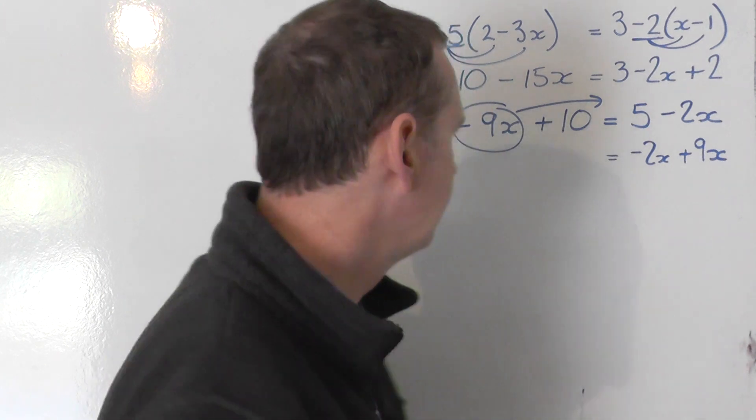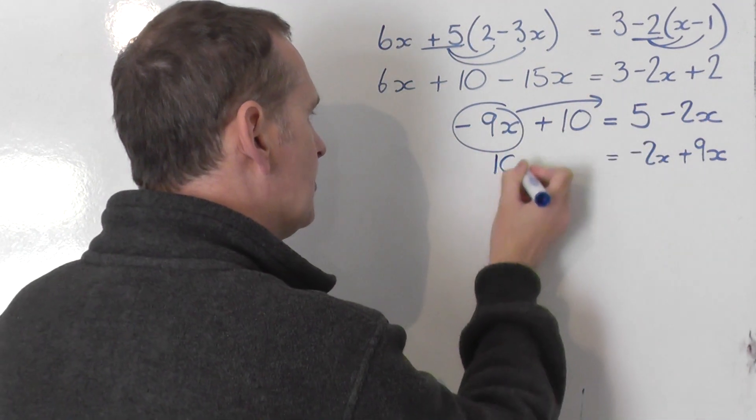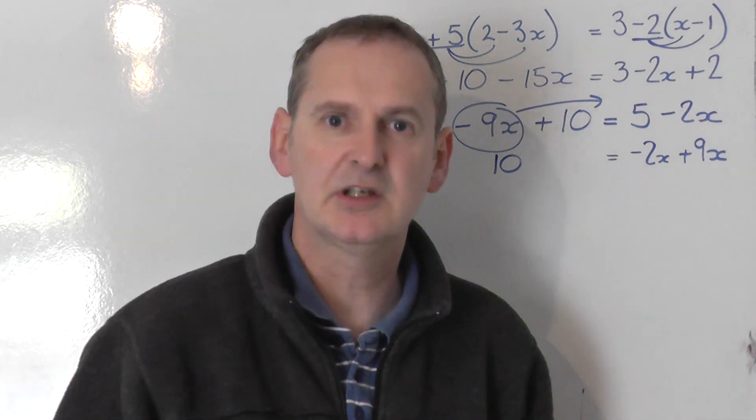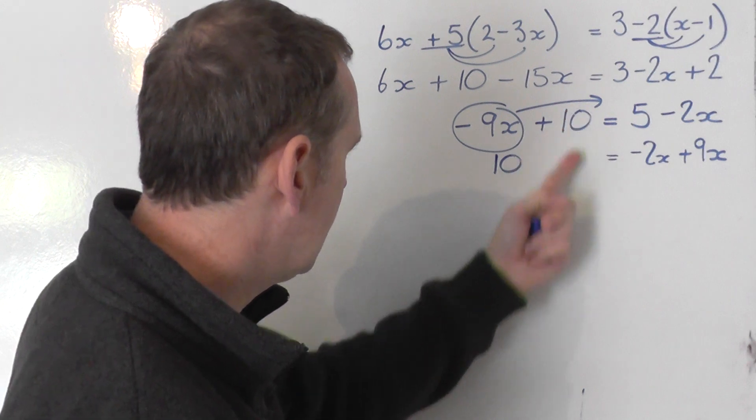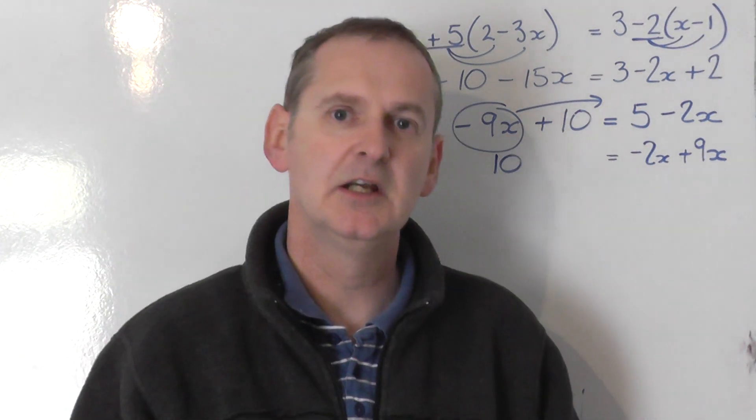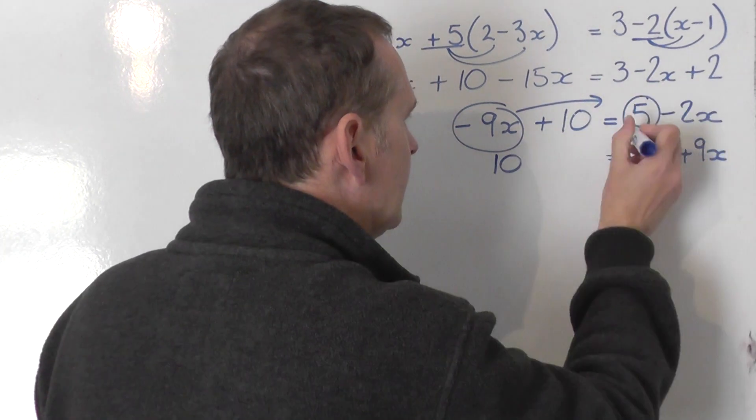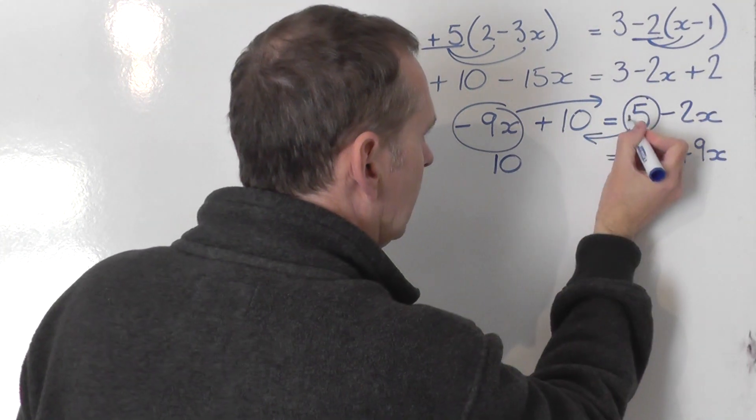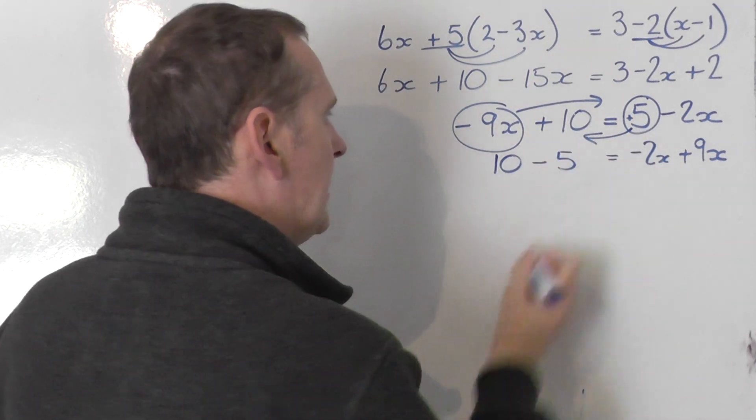Let's take the numbers the other way. The plus 10 doesn't have to swap sides so it remains plus. I can drop the plus if it's the first thing I write down. And then the 5. Take that to the other side. It's got a plus in front of it, so when it swaps that changes to a minus 5.